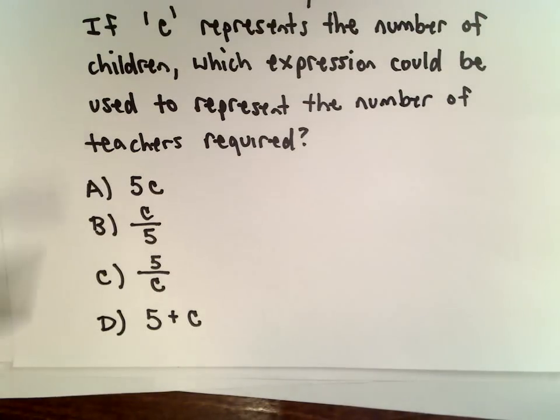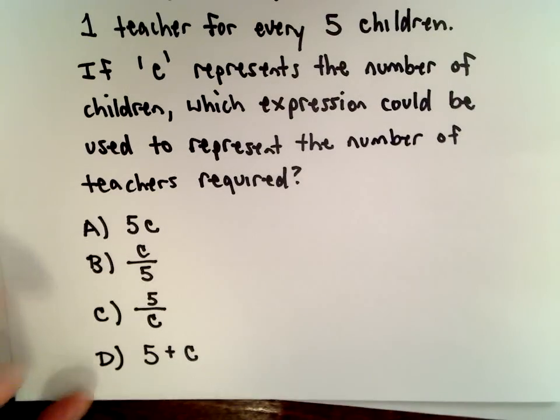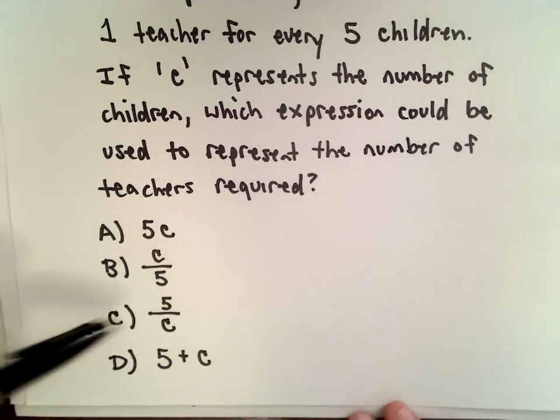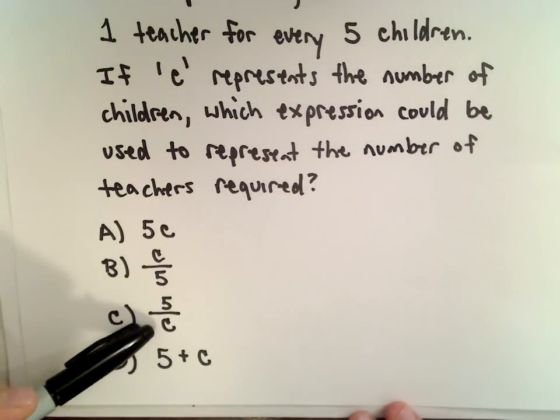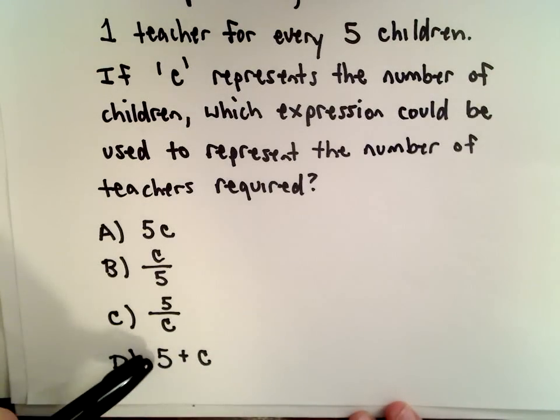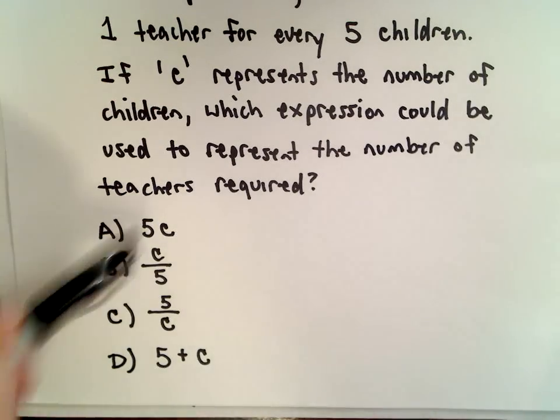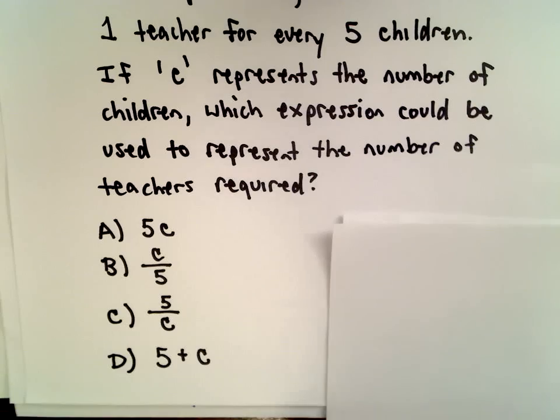Part A says five times the number of children. Part B says the number of children divided by five. Part C says five divided by the number of children. Part D says five plus the number of children. These expressions represent the number of teachers required.